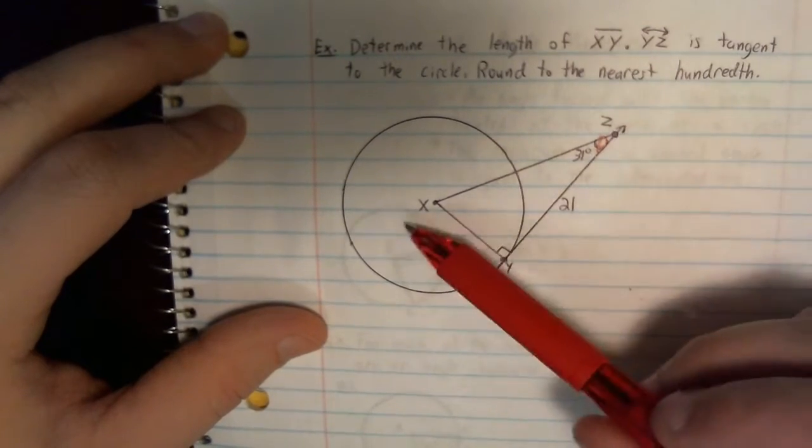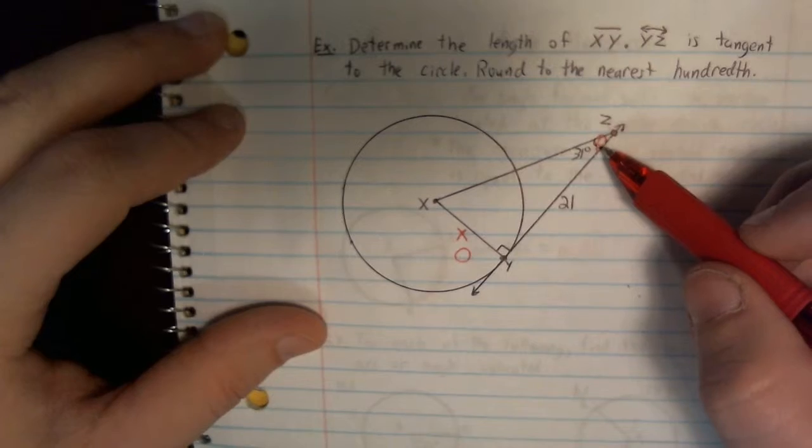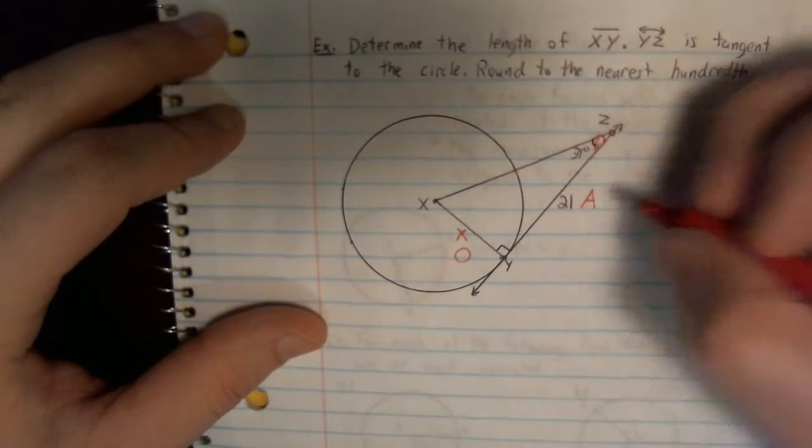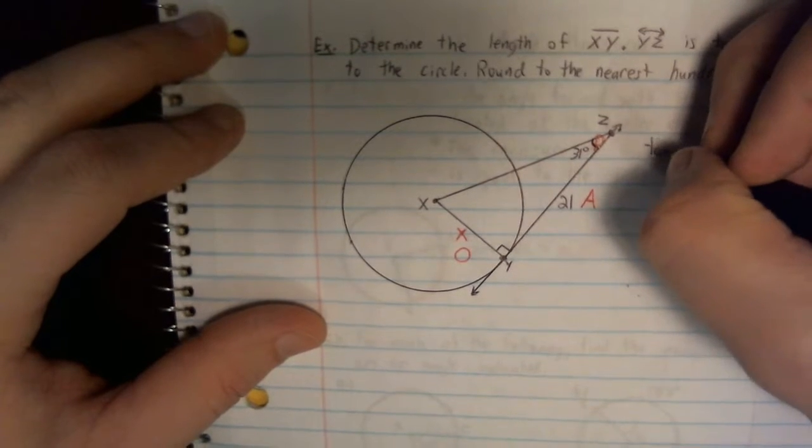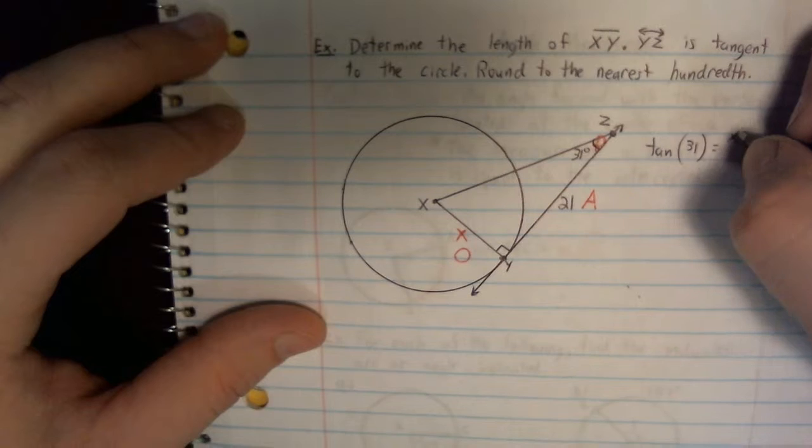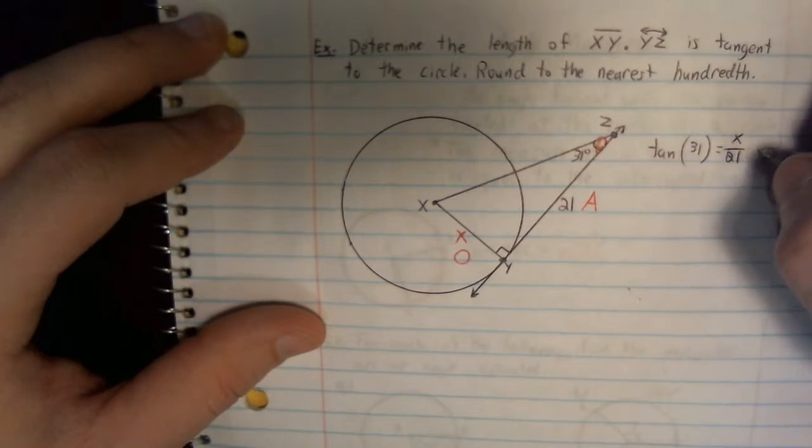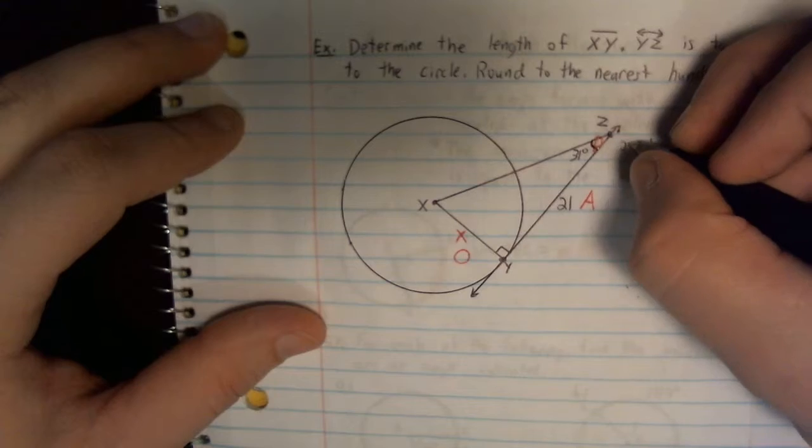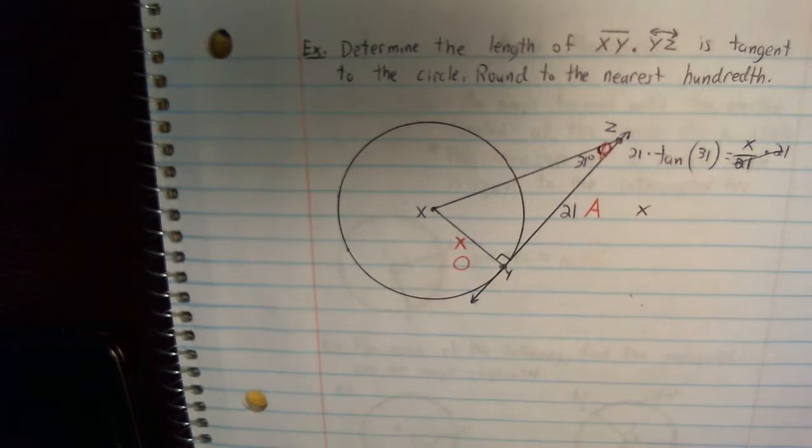Then we're going to label. They're asking us to find XY. XY is over here. That happens to be my opposite side. They gave me, this happens to be the adjacent side. So I got to think, I want to be using O and A. That means I'm using tangent. Tangent of 31 degrees equals opposite over adjacent, which is 21. So I got X over 21. This one's pretty easy, too. I just need to multiply by 21 on both sides. And then I would type that into my calculator. I want to be doing 21 times tangent of 31 degrees.